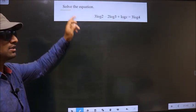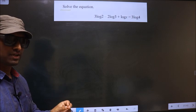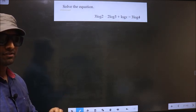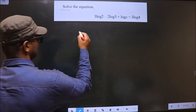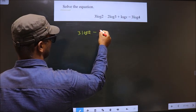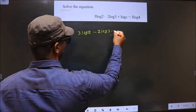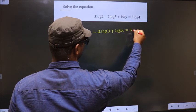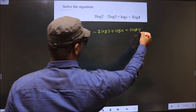We need to solve for the value of x. The given equation is 3 log 2 minus 2 log 3 plus log x equals 3 log 4.